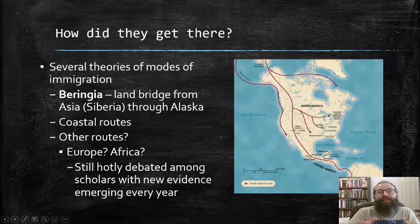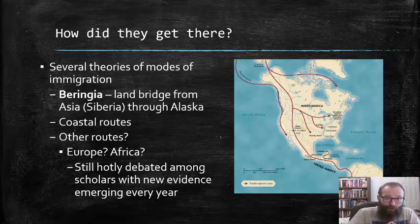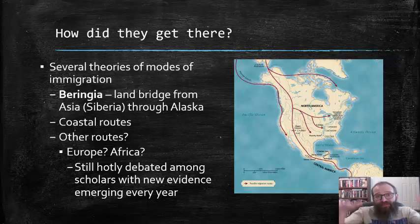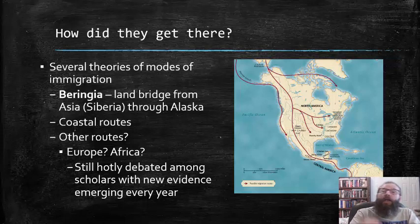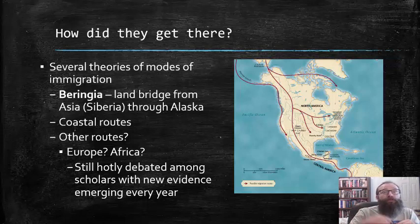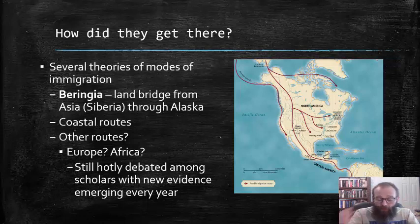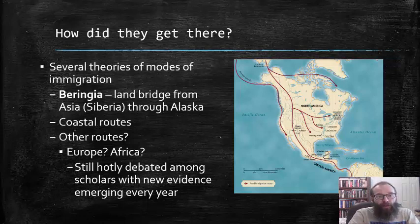How exactly did they get here? There are several theories of the modes of immigration that these peoples took. The most prominent is that of the Beringian land bridge. Before the end of the last ice age, when sea levels were much lower, the area currently covered by the Bering Strait between Siberia and Alaska was exposed, which allowed people to literally walk across that region and into the Americas, and over thousands of years, eventually down to the tip of South America.